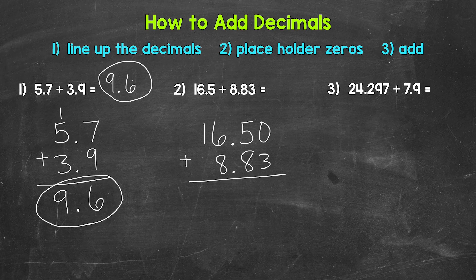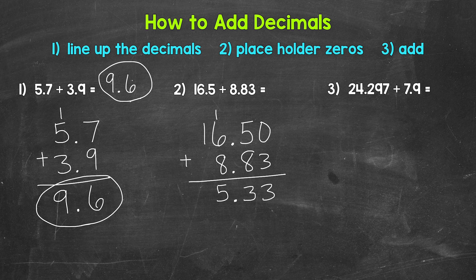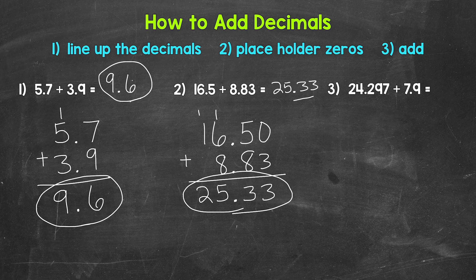Now we add, starting with the hundredths place. Zero plus three is three. Then five plus eight is 13. Bring the decimal straight down into our answer. Then one plus six is seven, plus eight is 15. And then one plus one is two. We end up with twenty-five and thirty-three hundredths. So 16 and five-tenths plus eight and eighty-three hundredths equals 25 and thirty-three hundredths.